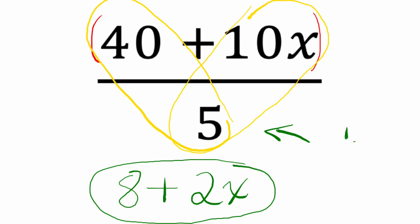So if I said 1/5 times (40 plus 10x), these are equivalent statements, right? Multiplying by 1/5 takes whatever you have and makes it 5 times smaller.